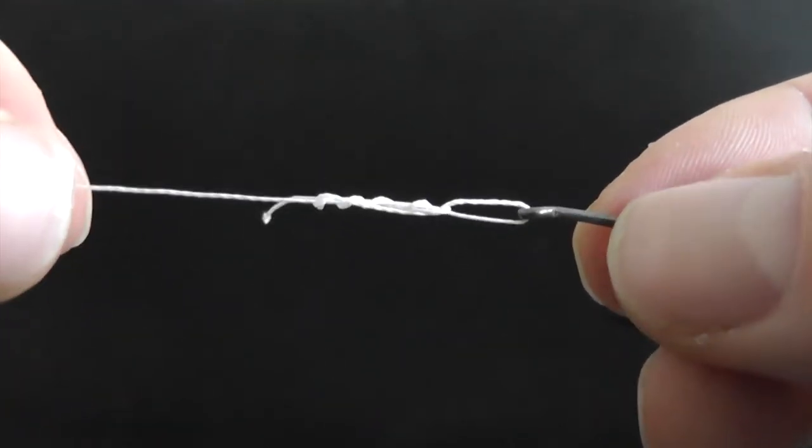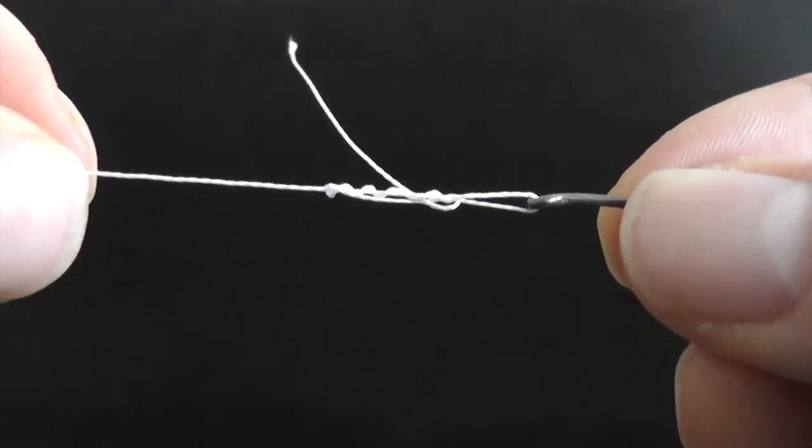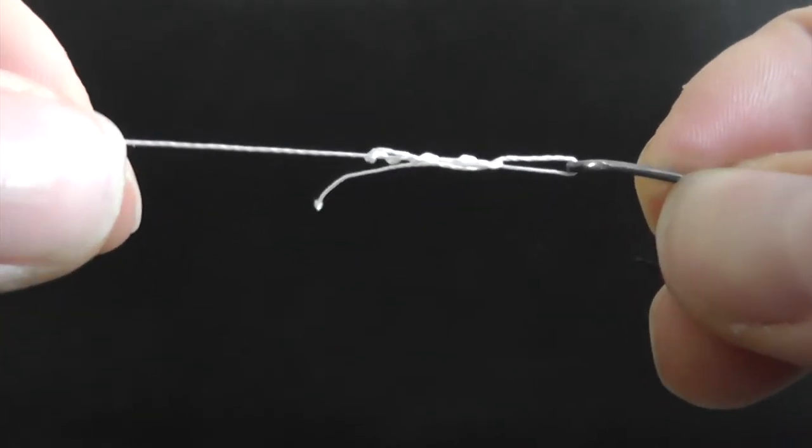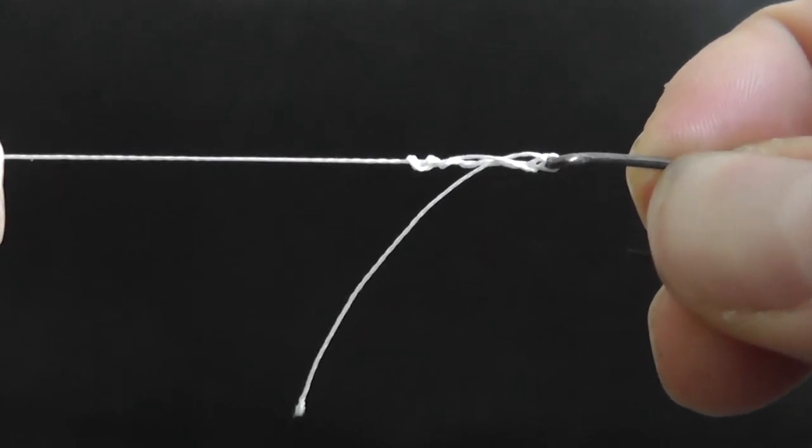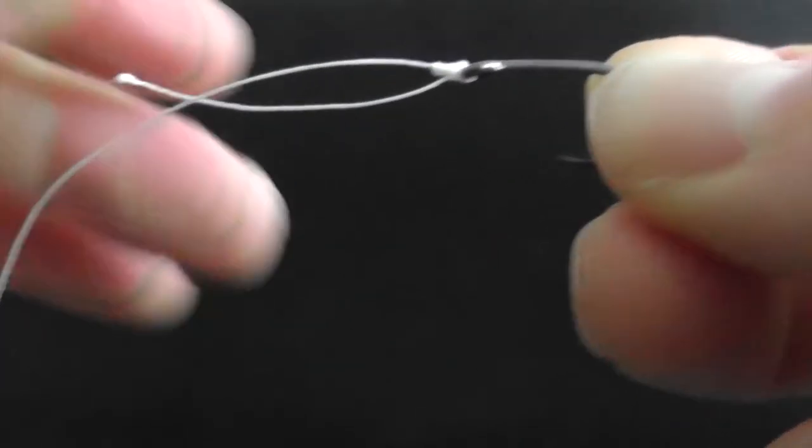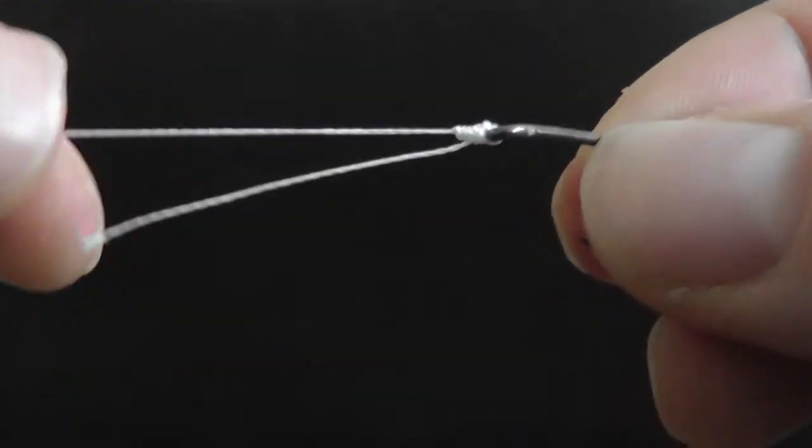And just start to slowly pull tight. Now, this will pull down. If you're tying this in mono, at this point you want to wet that line with a bit of saliva or something just to stop the line burning against itself. And then all we do is just slowly pull down and form up the knot.